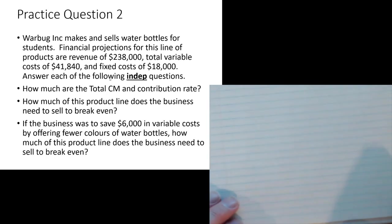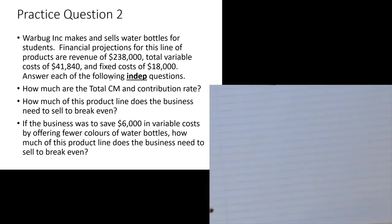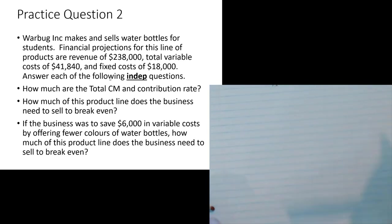Question 2: Warbug Ink makes and sells water bottles for students. Financial projections show revenue of $238,000, total variable cost of $41,840, and fixed cost of $18,000. There are four parts to this question — three solved together, one left as a quiz. Part A: find the total contribution margin and contribution rate.